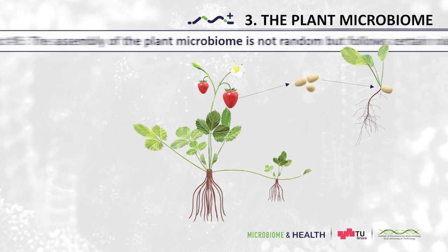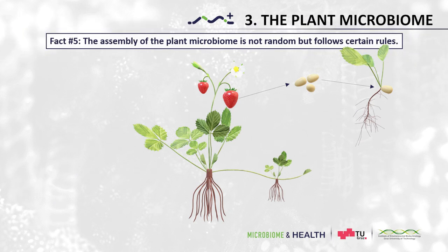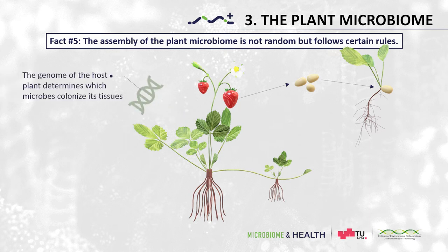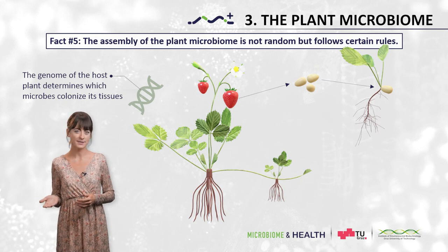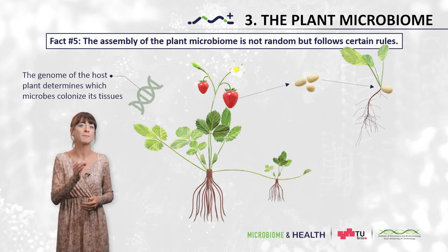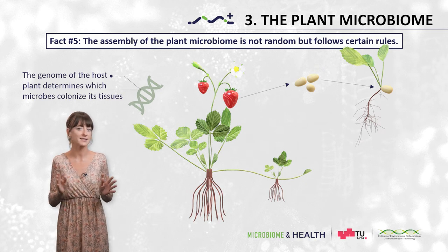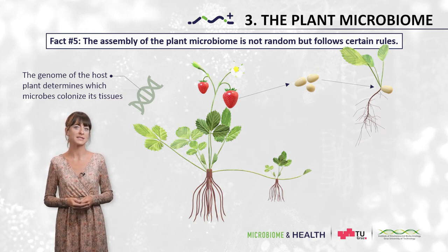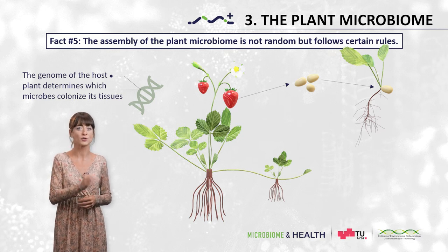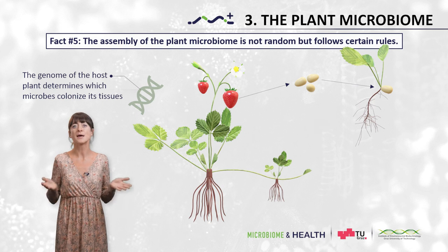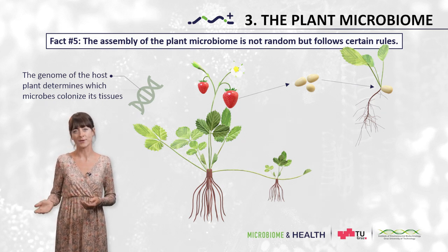Fact number five: the assembly of the plant microbiome is not random but follows certain rules. The rules determining when and where which microbes colonize the plant are not yet fully understood. Apart from environmental conditions and interactions between microbes, it is especially the genome of the host plant that plays a decisive role. We often see a specific set of microbes associated with a specific plant species across very different habitats and environments.